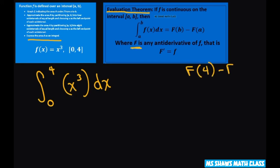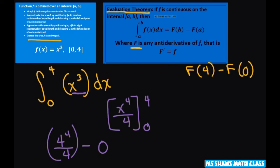So when I take the anti-derivative of this is going to be x to the fourth divided by 4 and we're evaluating this from 0 to 4. So we're doing F of 4 which is 4 to the fourth divided by 4 minus 0. And 4 to the fourth is 256 divided by 4 equals 64. So the actual area under the curve is 64 and that's it.